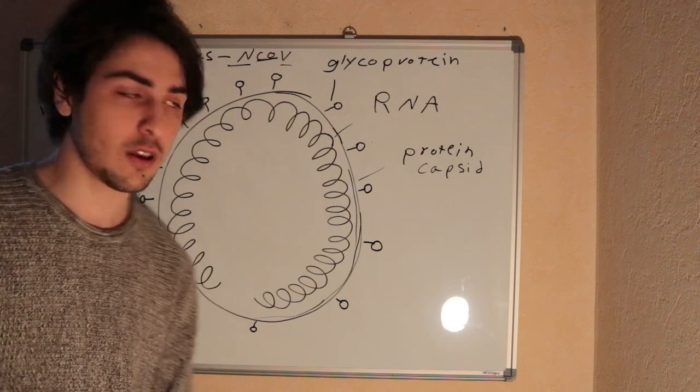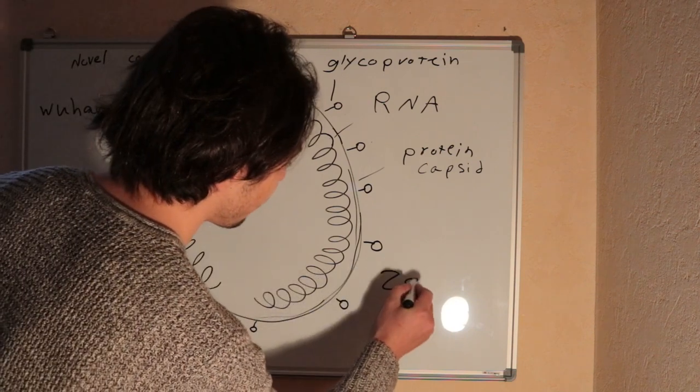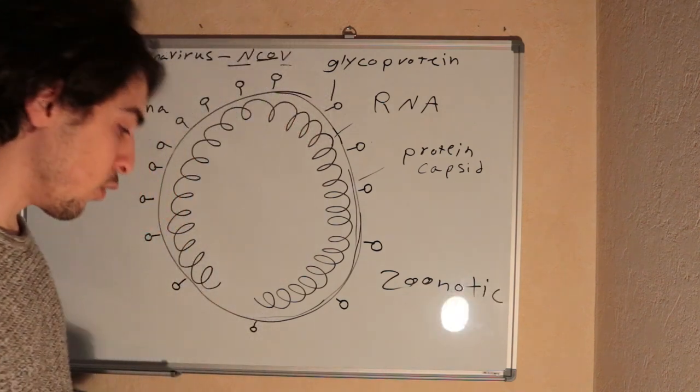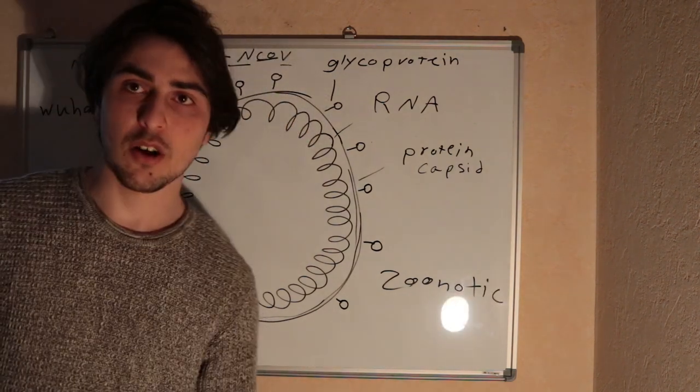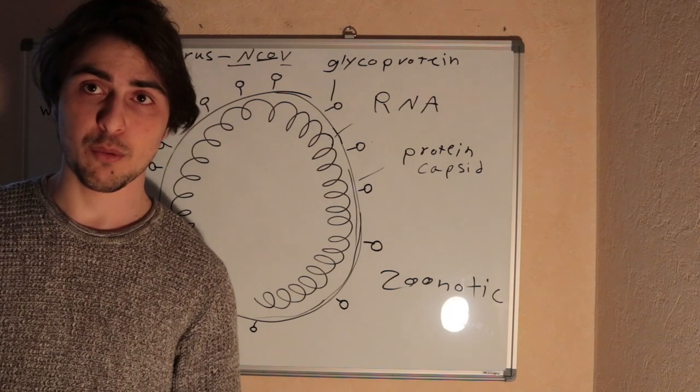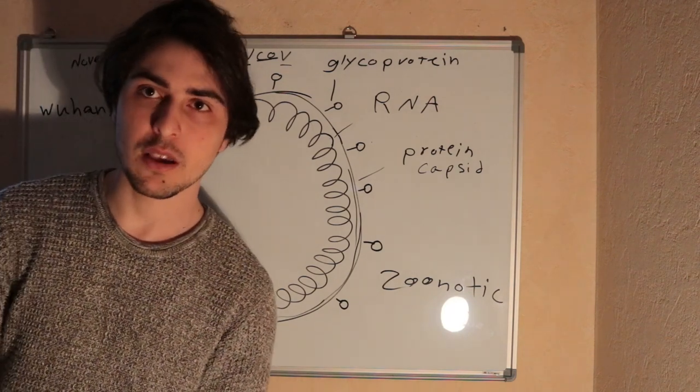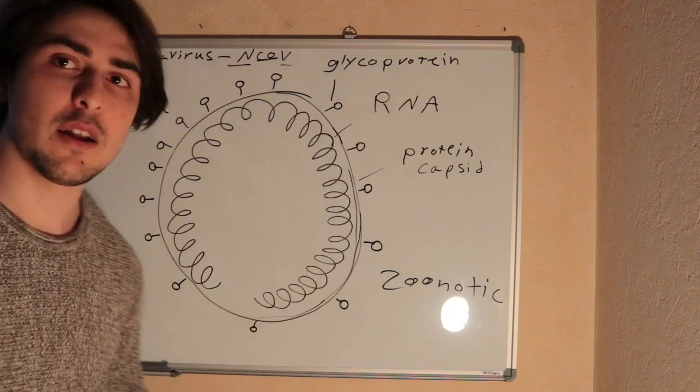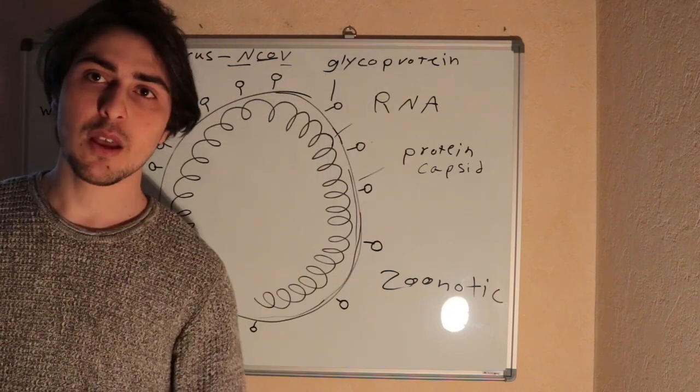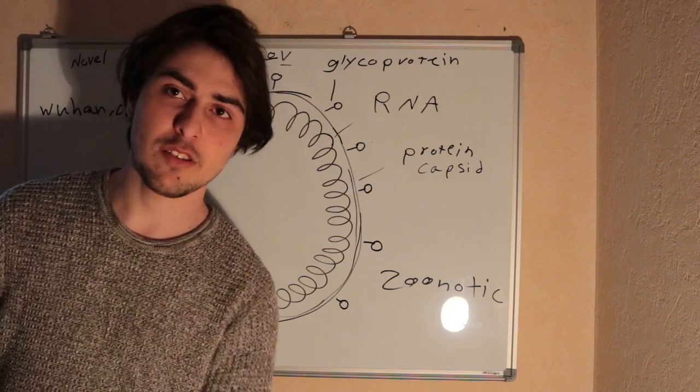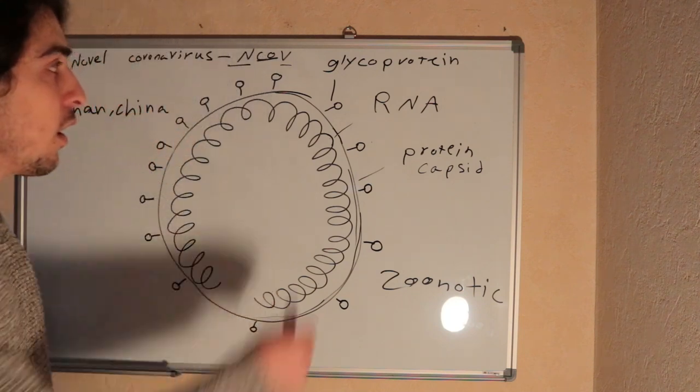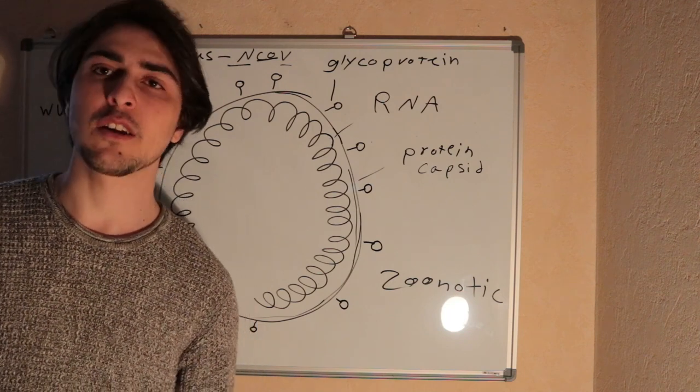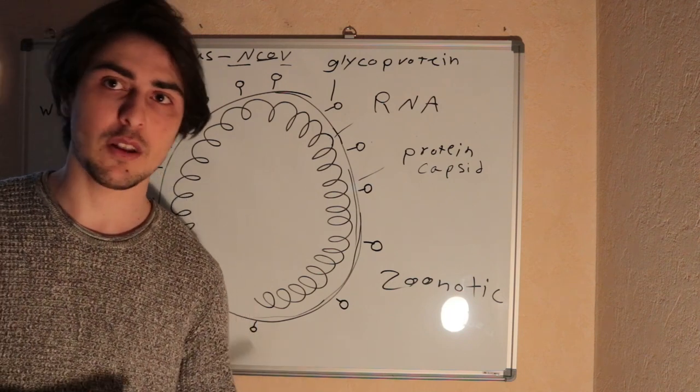This virus is zoonotic, meaning it comes from animals. According to the latest medical discovery, this virus comes from bats because the coronaviruses in bats have a similar glycoprotein. Some people say it comes from snakes because they have similar RNA. But maybe this virus can come from a different animal, an animal that no one thought about.